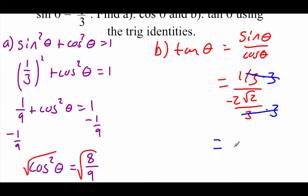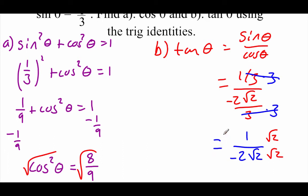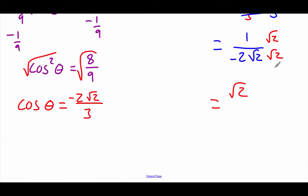So I'm going to multiply both of those by 3. We do a little canceling. On top, now we've got 1. On bottom, we've got negative 2√2. Now just like before, we can't leave the radical on the bottom of the fraction, so I'm going to multiply top and bottom by the square root of 2. On top, we get just the square root of 2.